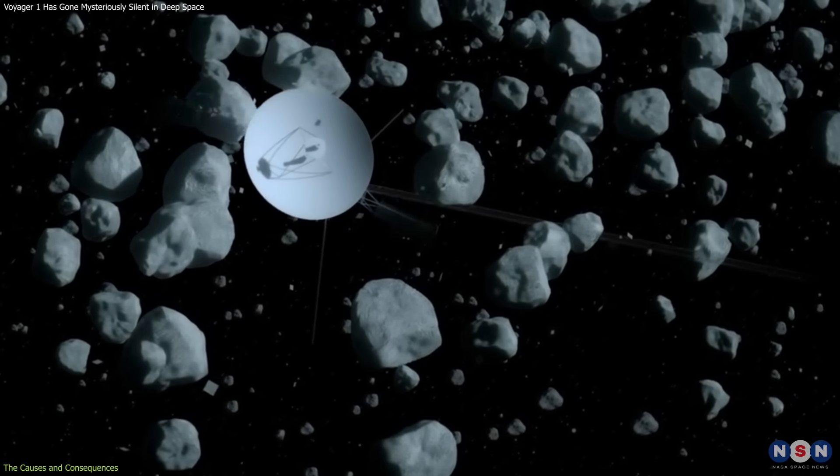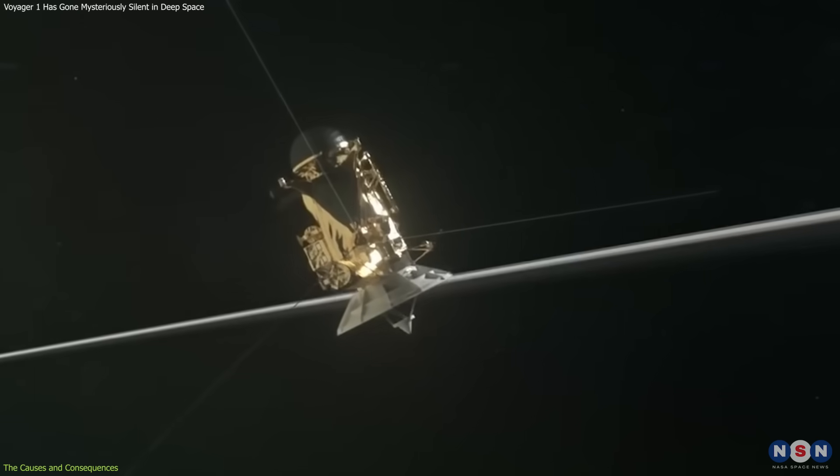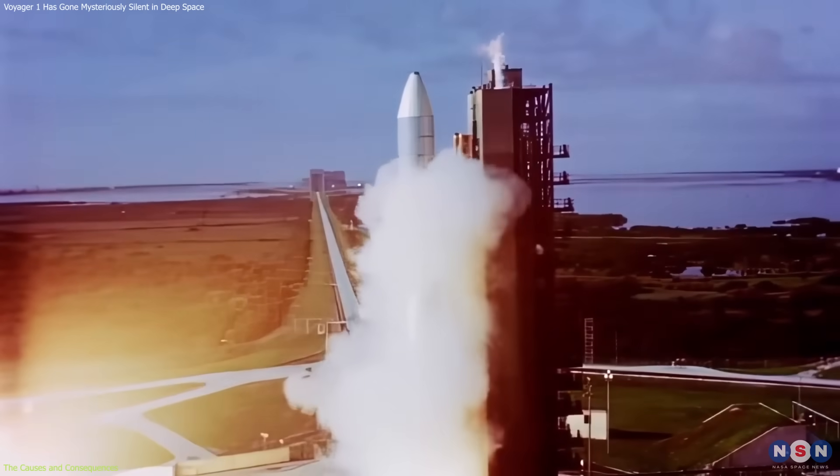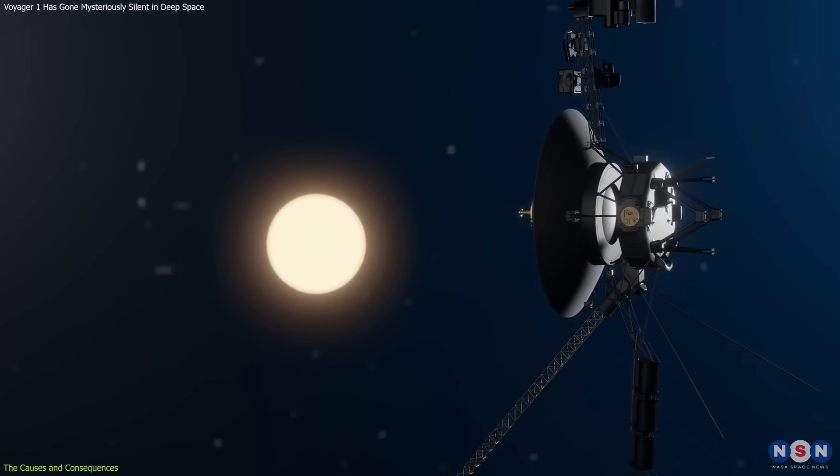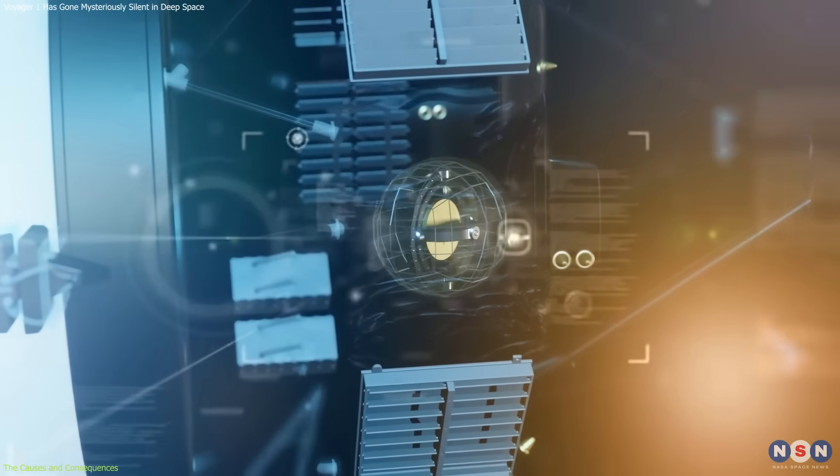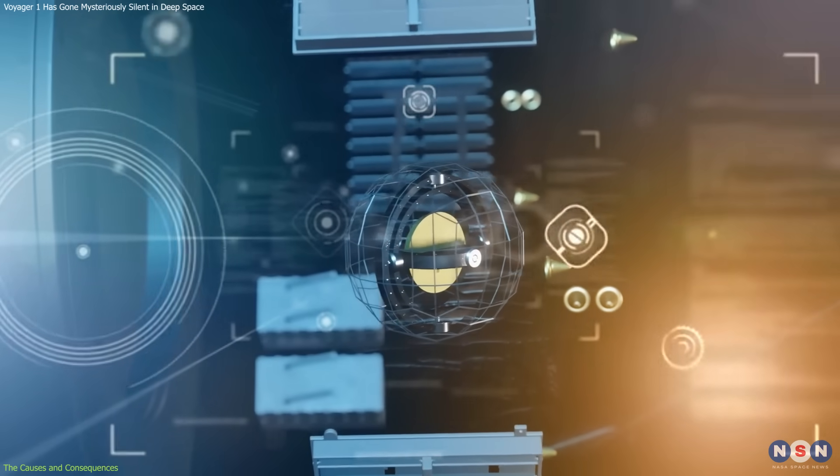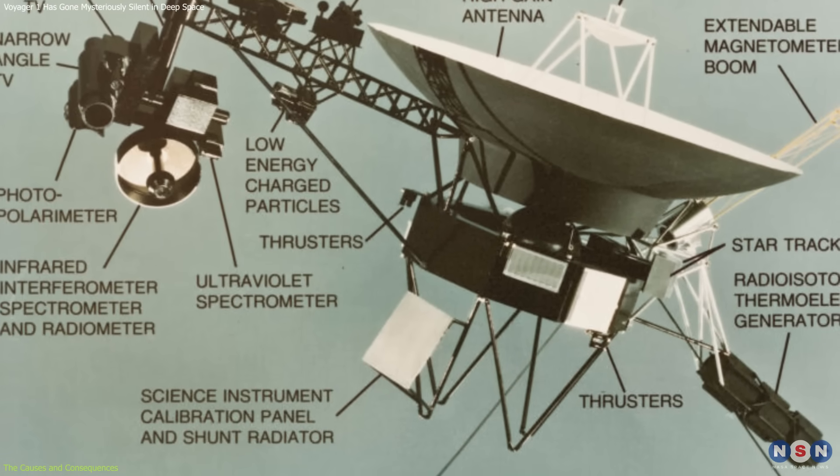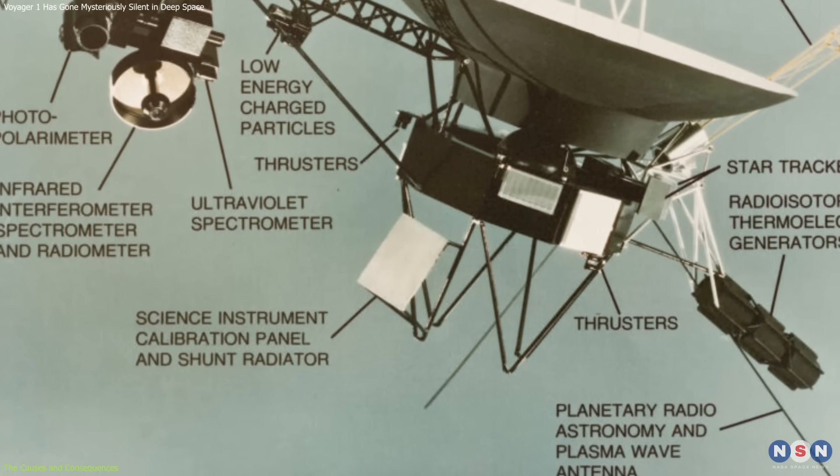Let's start with the age. Voyager 1 is very old by spacecraft standards. It was launched in 1977 and it has been operating for over 46 years. That means that its hardware and software are outdated and prone to wear and tear. Some of its components have already failed or degraded, and others are expected to do so in the near future.